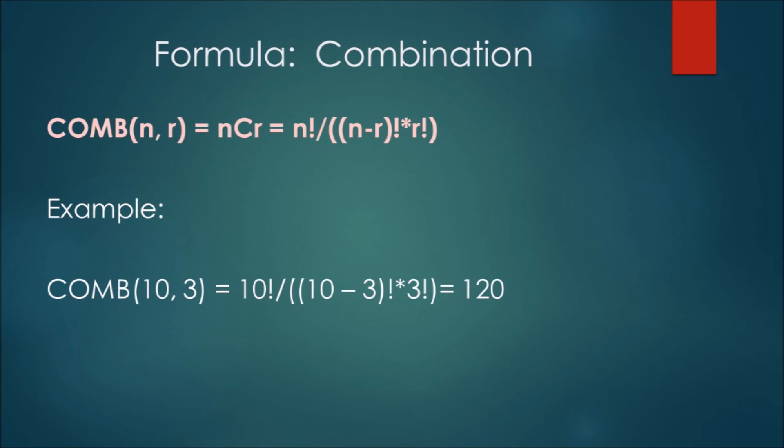The number of combinations is calculated by n factorial divided by the quantity of r factorial times n minus r factorial. Note that this is the number of permutations divided by r factorial. In our example, the number of combinations where n is equal to 10 and r is equal to 3 is 720 divided by 3 factorial or 120.